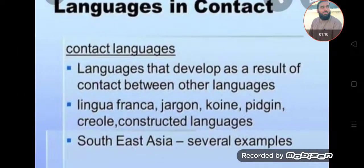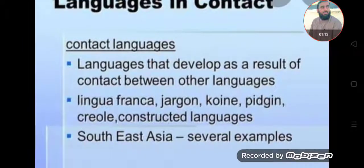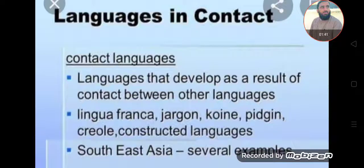There are other definitions as well. A language that develops as a result of contact between other languages includes examples like lingua franca, jargon, pidgin, creole, and constructed languages. Most South Asian languages are civil examples of this. Lingua franca is one such example where different languages are spoken in particular situations.